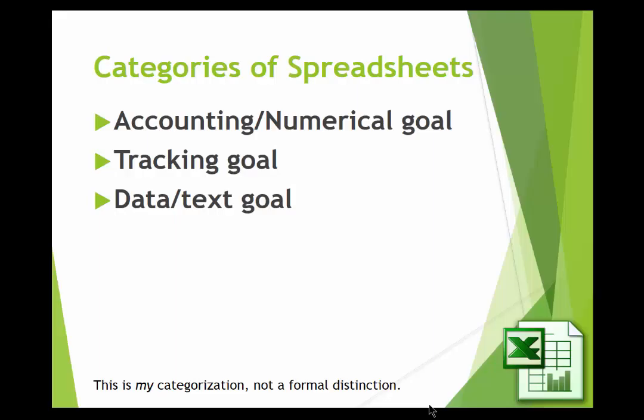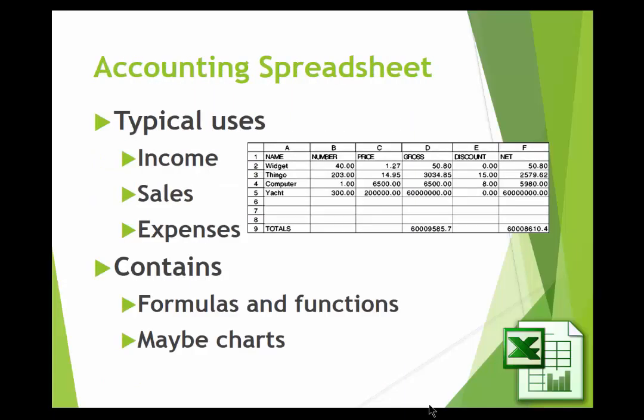The first is the one you would think of most typically: some kind of an accounting or numerical goal. A second category is a tracking goal — keeping track of how many of this or that occurred over a period of time, and that's frequently designed into a paper template that would be printed off and filled in by hand. A third kind would be more of a data or text kind of goal. They're all made the same way, but thinking about the goals will help you develop them more appropriately.